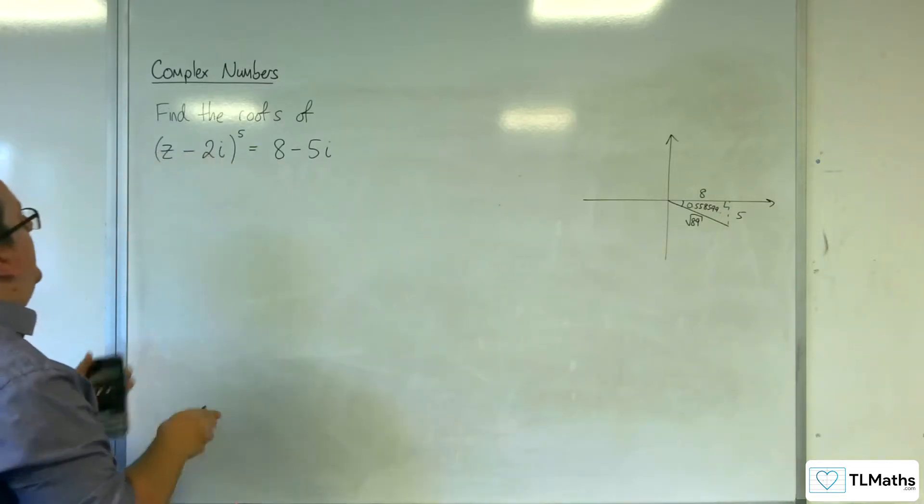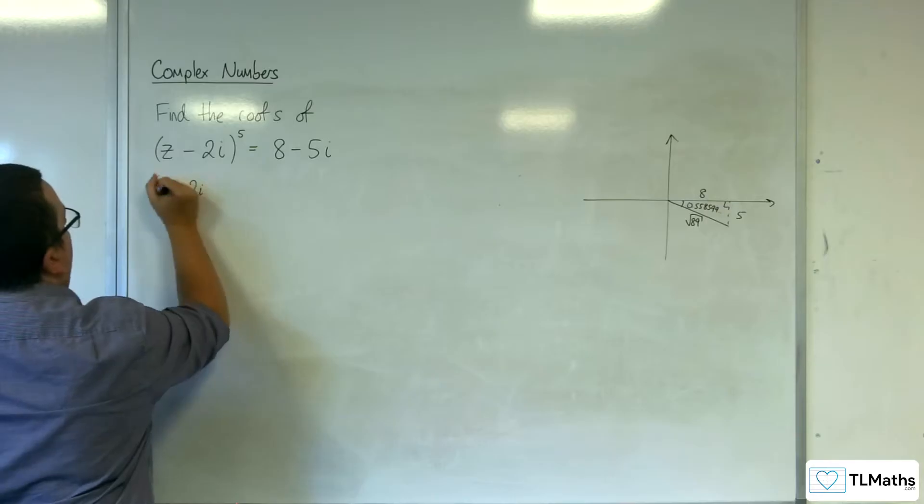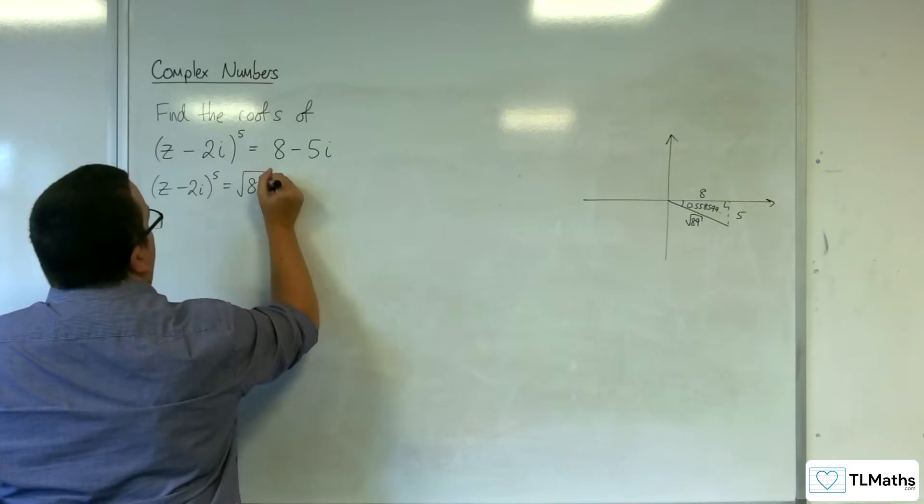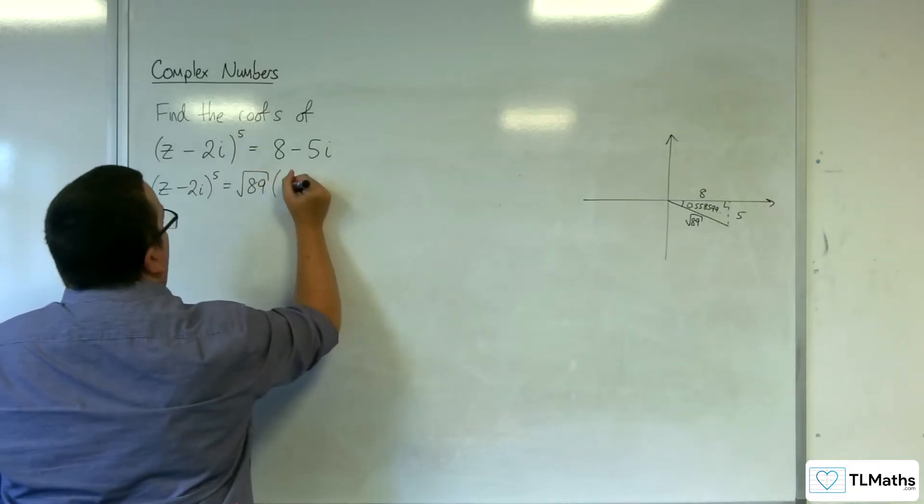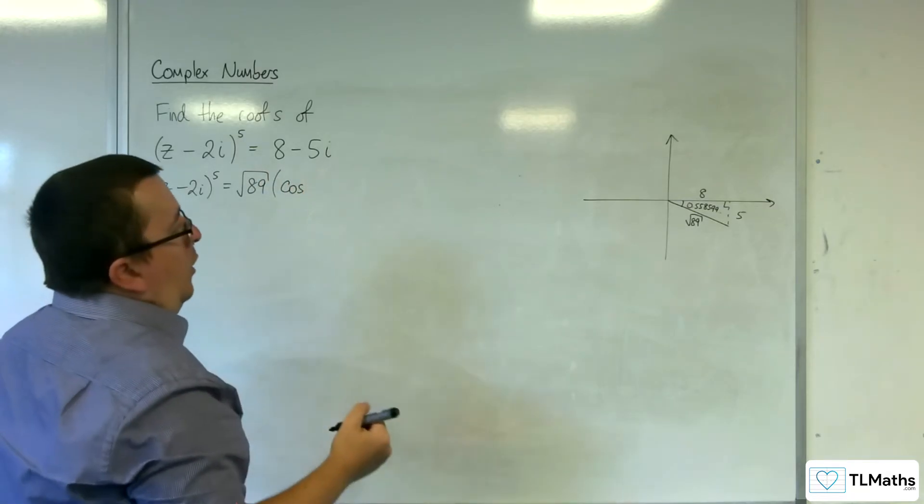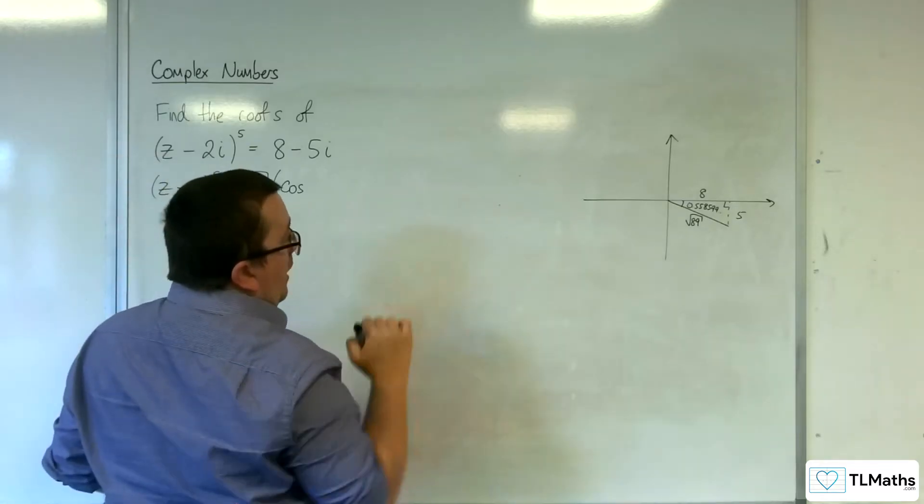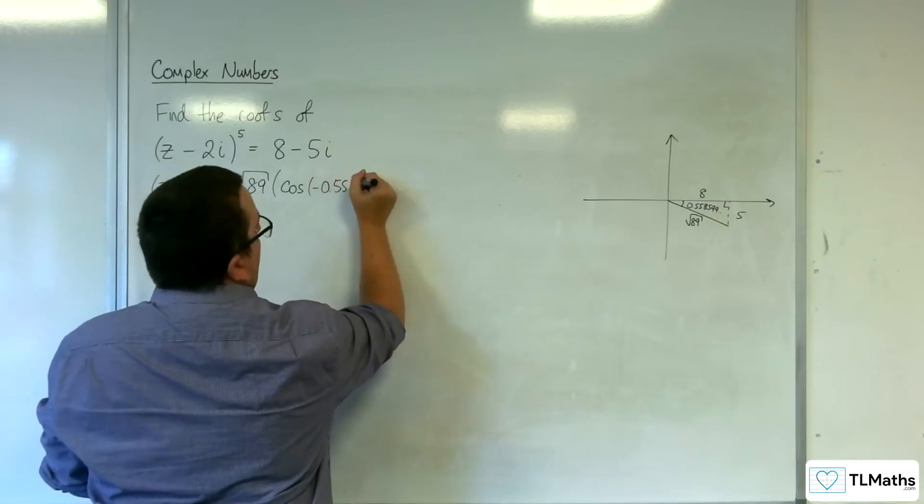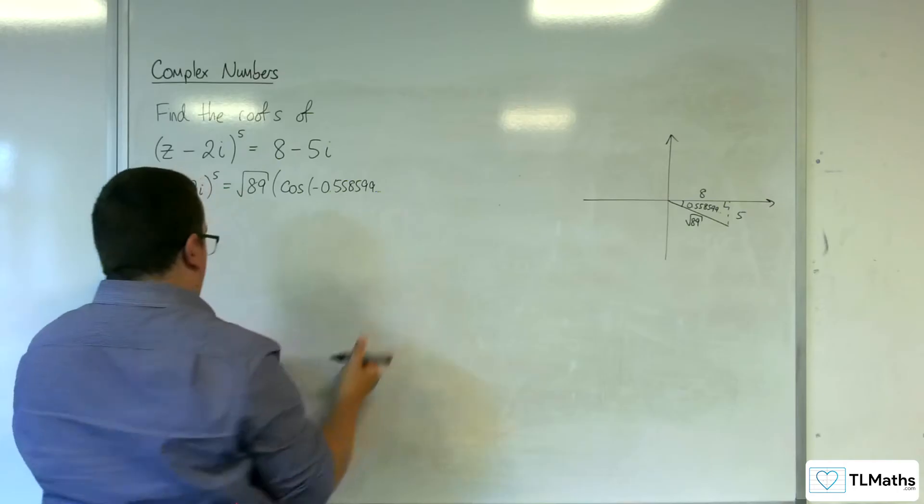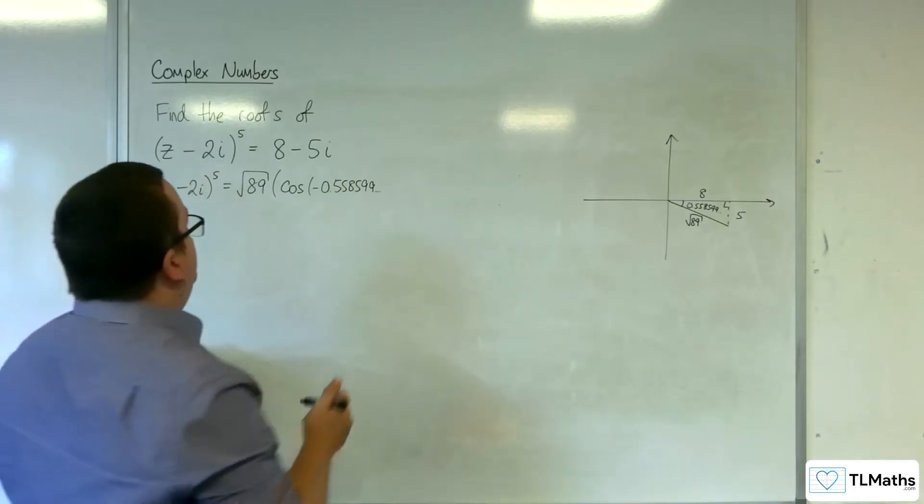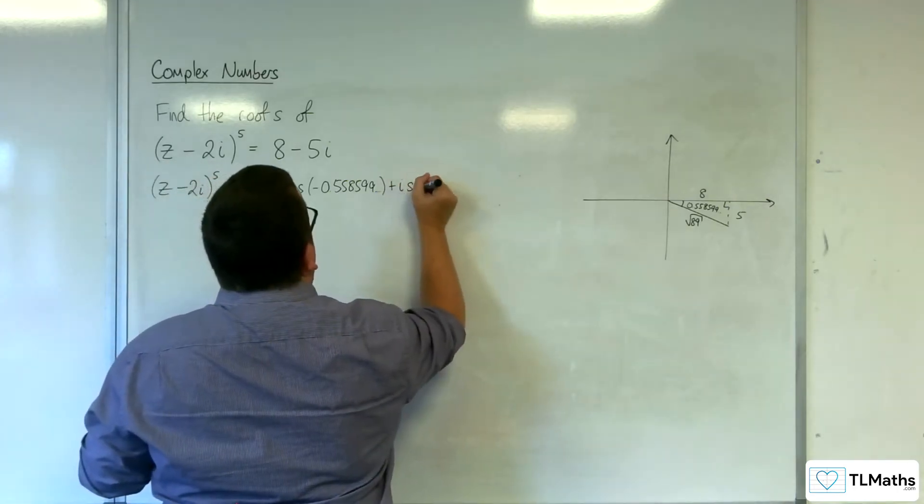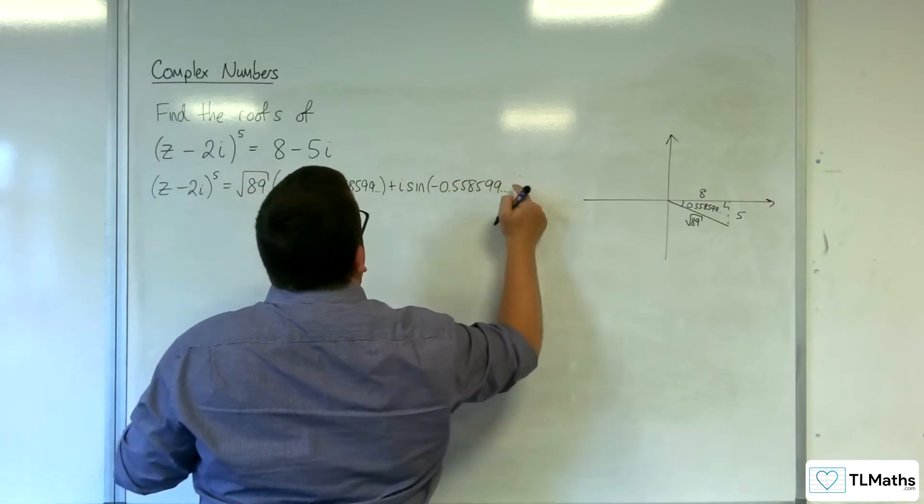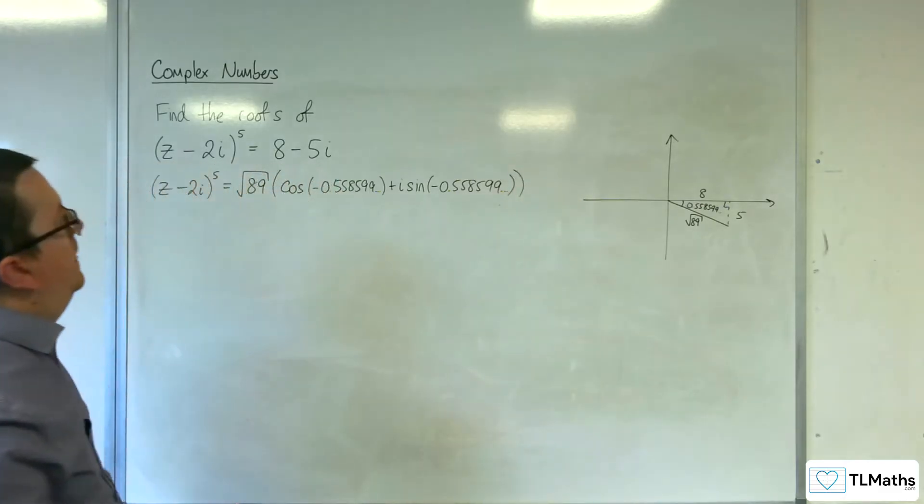So we can say that z take away 2i to the power of 5 is going to be equal to root 89 times cosine of minus 0.558599 plus i sine of minus 0.558599.